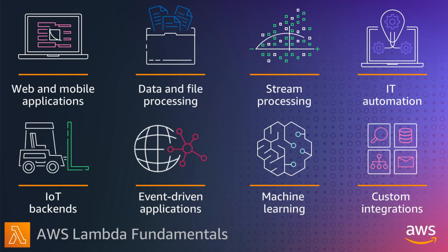Use Lambda and Amazon Kinesis or Kafka to process real-time streaming data for application activity tracking, transaction order processing, clickstream analysis, data cleansing, log filtering, indexing, social media analysis, IoT device data telemetry, and metering.